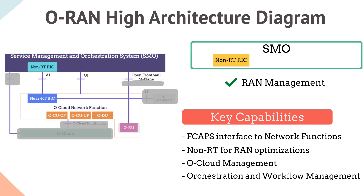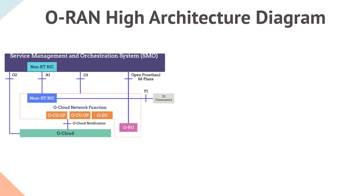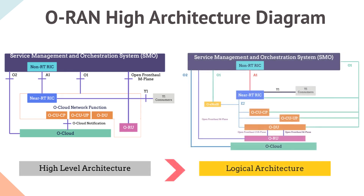The open fronthaul M-plane interface is between SMO and ORU for FCAPS support, and the O2 interface is between the SMO and the O-Cloud. Now let's look at the O1 interface in the logical architecture of ORAN to understand more interfaces between the ORAN components.